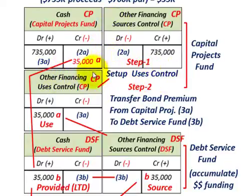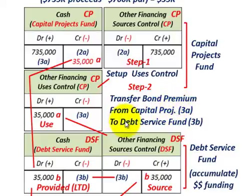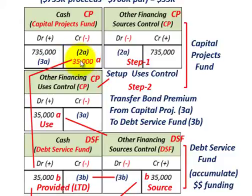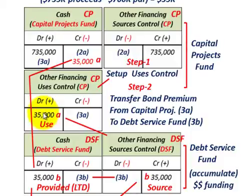Step one is to set up our other financing uses control account in the capital projects fund. Step two is the actual transfer: we credit or reduce our cash account in the capital projects fund by $35,000 — since that $35,000 was the premium portion of the $735,000 collected. The associated debit goes to other financing uses control for $35,000, representing the use of those funds.